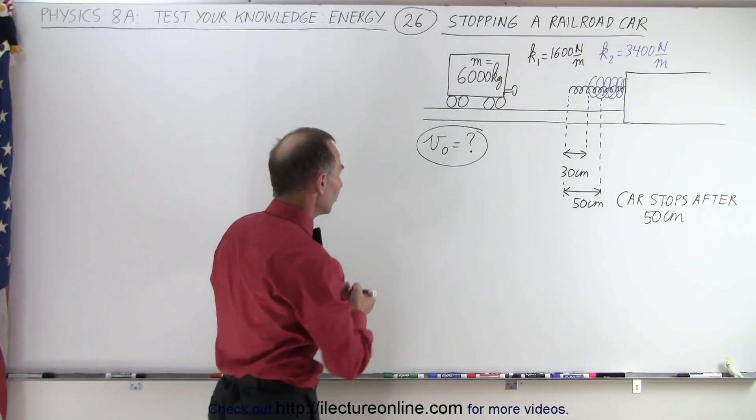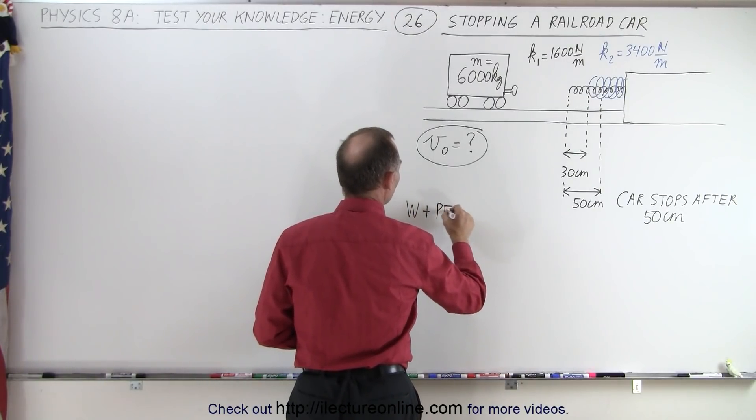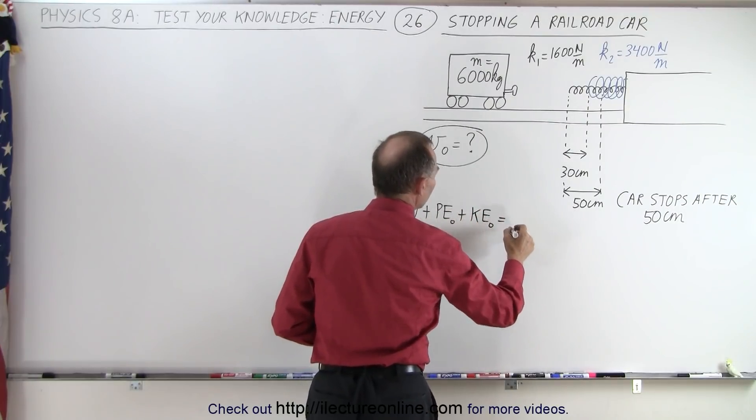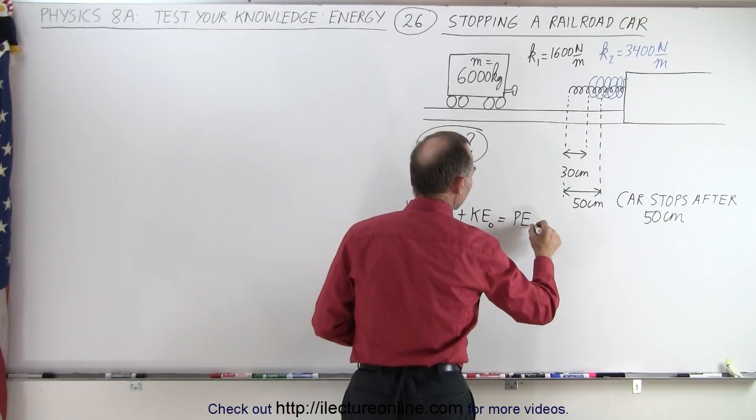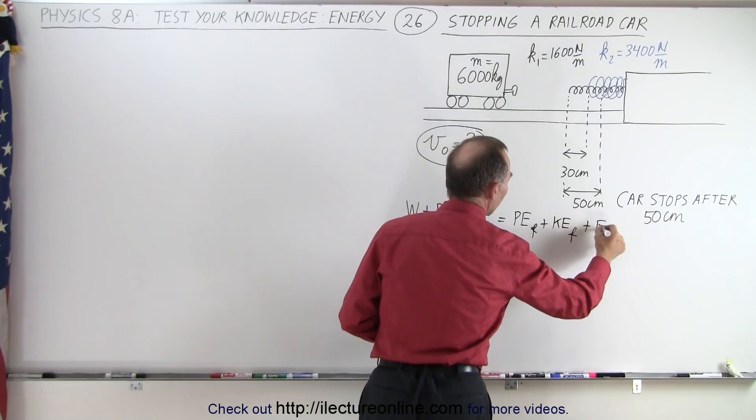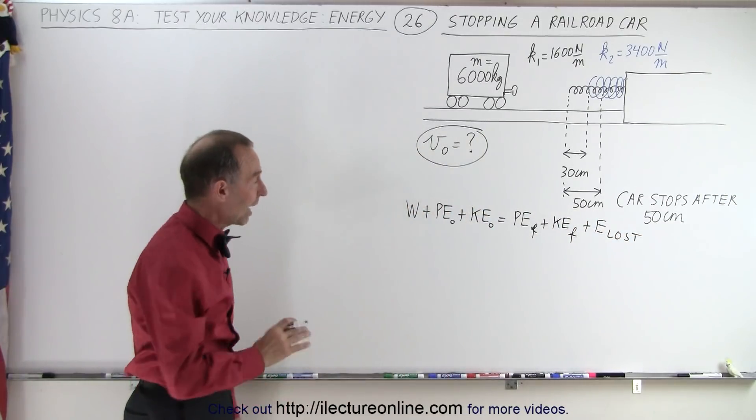Well, again we use the energy equation. We say that any work put into the system plus any initial potential energy plus any initial kinetic energy is equal to potential energy final plus kinetic energy final plus any energy loss due to friction. All right, let's see what we have.